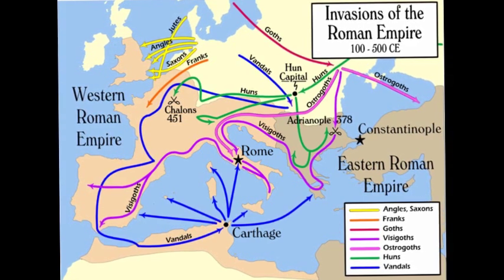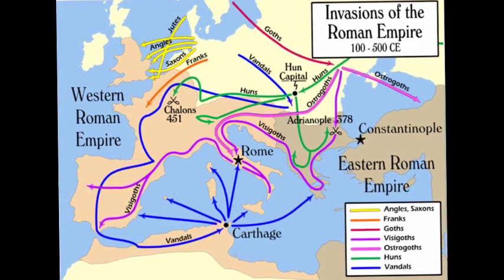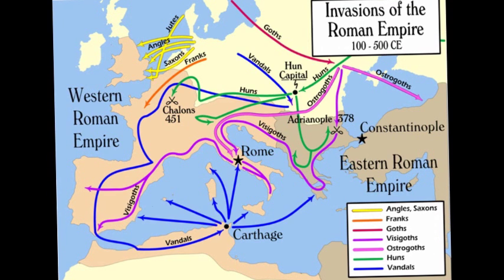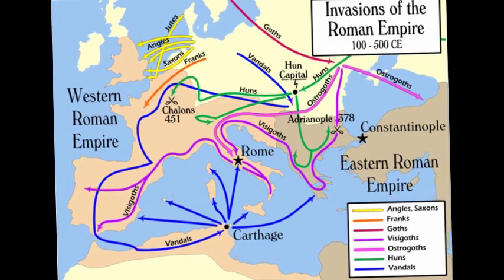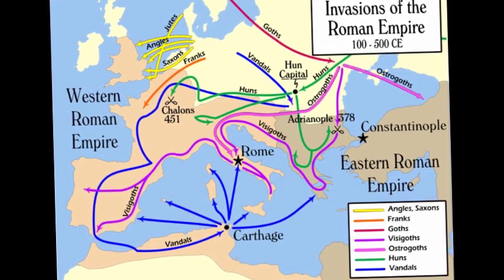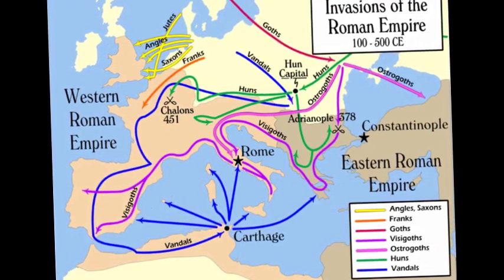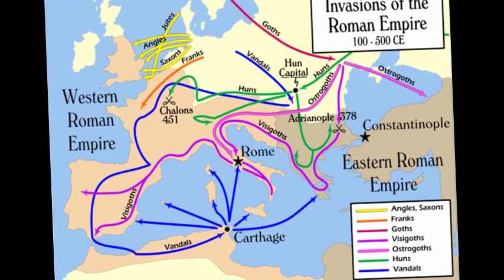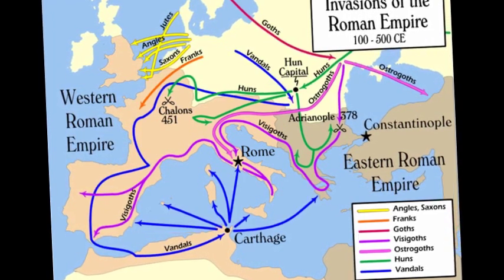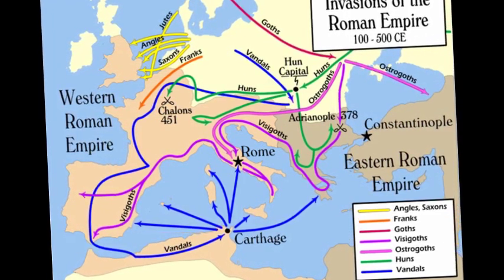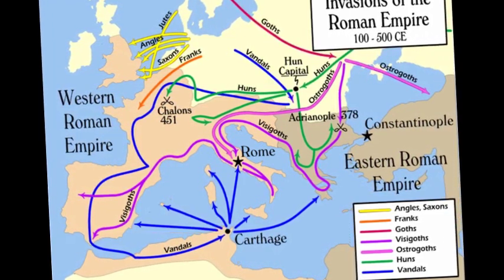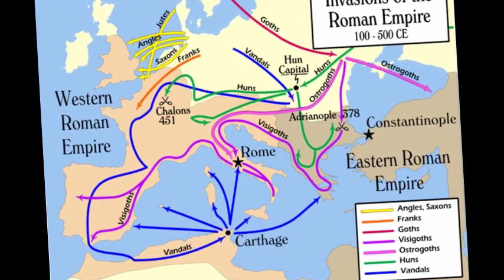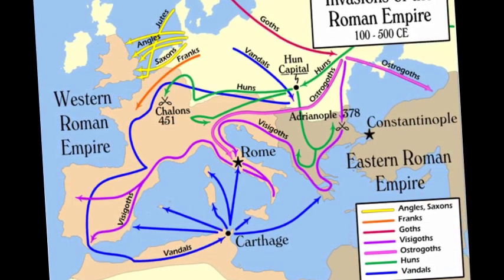You can see in the picture what happened during the invasion of the Roman Empire. It is a little confusing, but you can see the Visigoths and the Vandals moving to Rome by sea and by land. On the north it is possible to see the Angles, the Saxons and the Jutes moving to English territory.